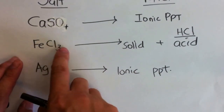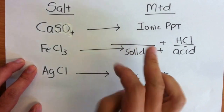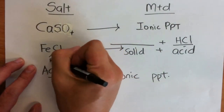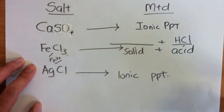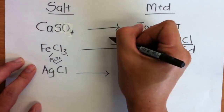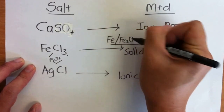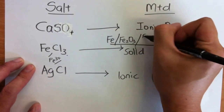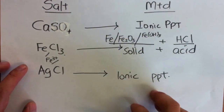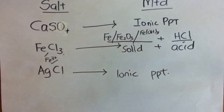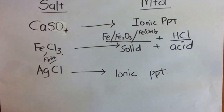In the case of iron chloride — this is iron 3 plus, because you get 3 Cl — you can use iron, iron 3 oxide, iron 3 hydroxide, or iron carbonate. That's how you settle the solid and acid part.